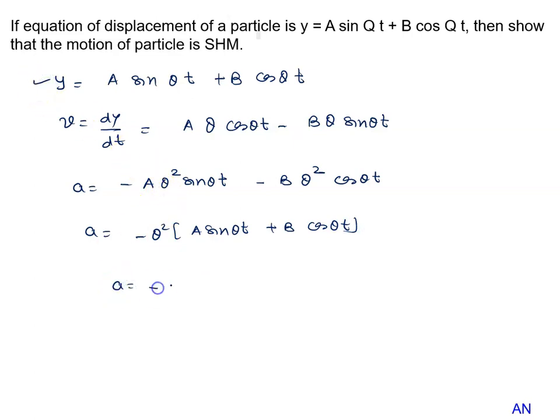And if you compare with the y, we can say acceleration is given by minus Q square into y. It means a is proportional to minus y, so this is the condition of SHM.